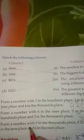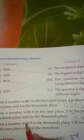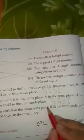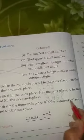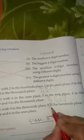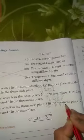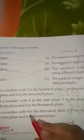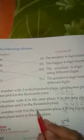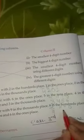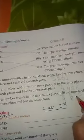Form a number with 9 in the thousands place, 8 in the hundreds place, 7 in the tens place, and 6 in the ones place. The answer is 9876.